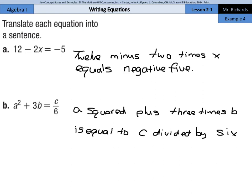So, again, we have our A squared plus 3 times B is equal to C divided by 6.